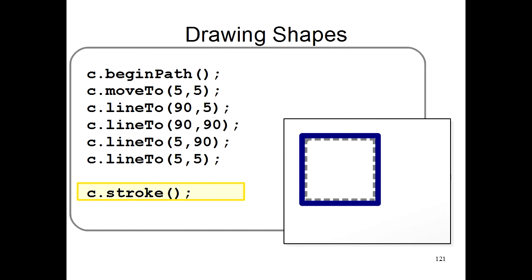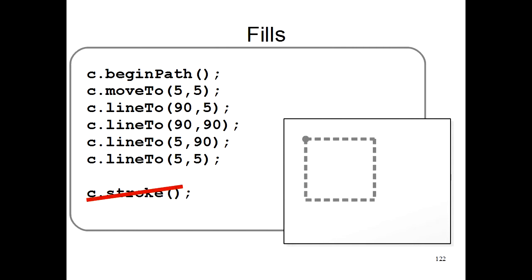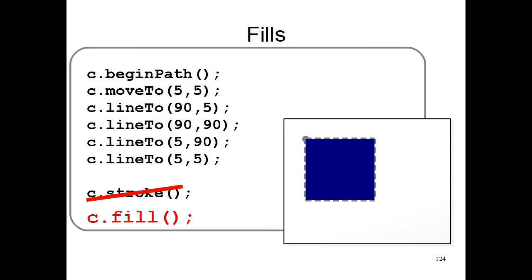Let's say instead of drawing the outline, we actually wanted to draw a filled-in shape. All we have to do is remove the c.stroke command and use the command c.fill instead. When the computer sees c.fill, it fills in the shape instead of just drawing the outline.